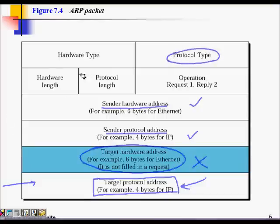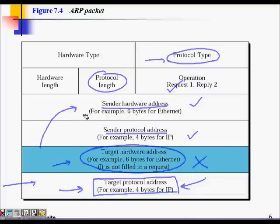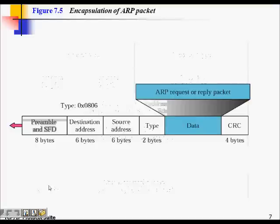Additional header fields tell the receiver: the protocol type is ARP, whether it is an ARP request or an ARP reply, and the hardware type and lengths. System B checks whether the target IP address matches its own; if it is John — system B — it replies with its hardware address. The ARP reply is sent as a unicast to the sender's hardware MAC address.